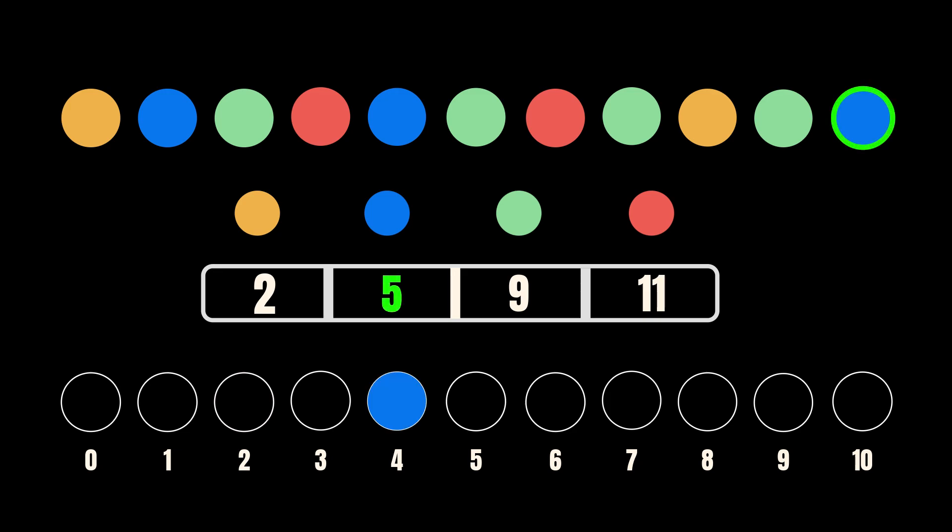The corresponding number is five, which means there are five colors that come before blue, including the blue, so it's going to the fifth position in the output. Then update the prefix sum by decrementing the count because there are four fewer numbers that will come before the color.